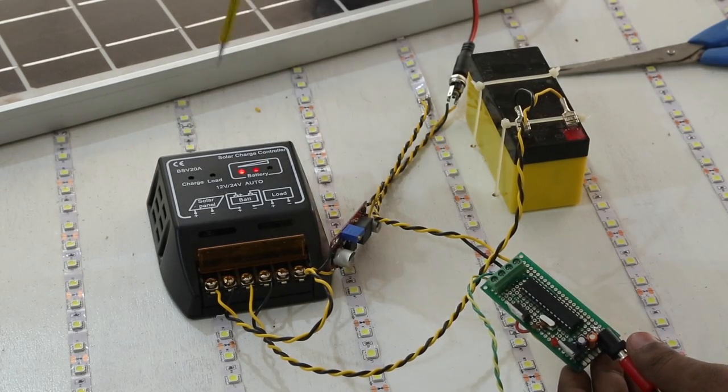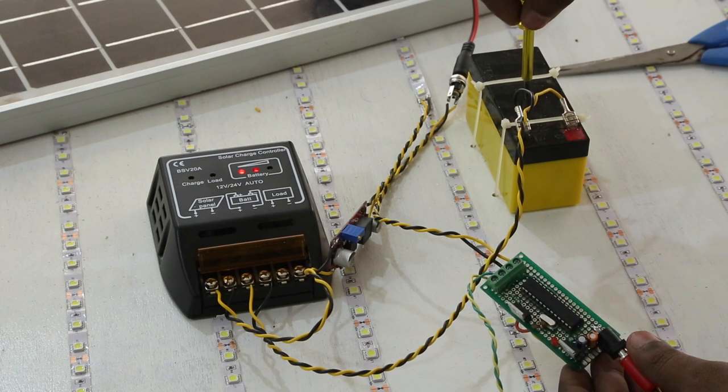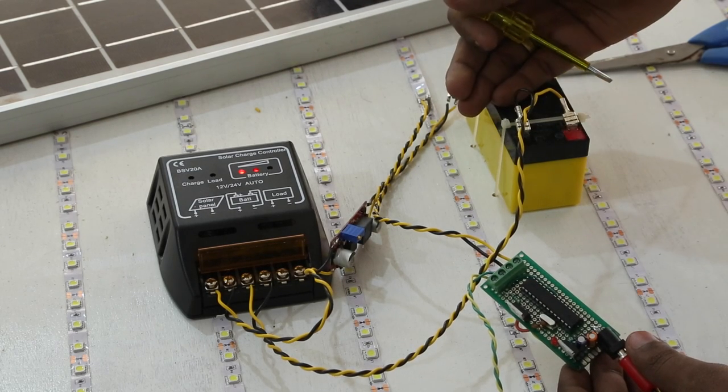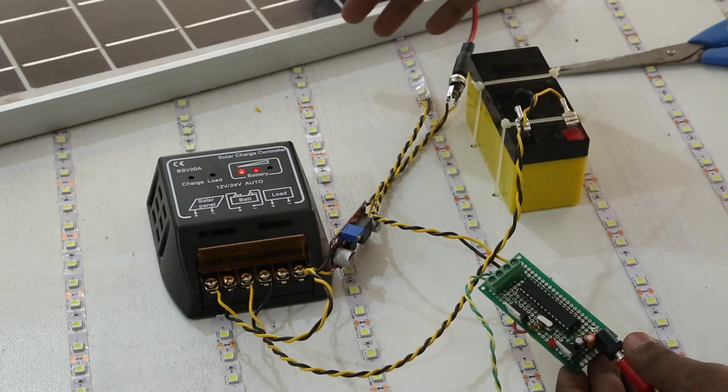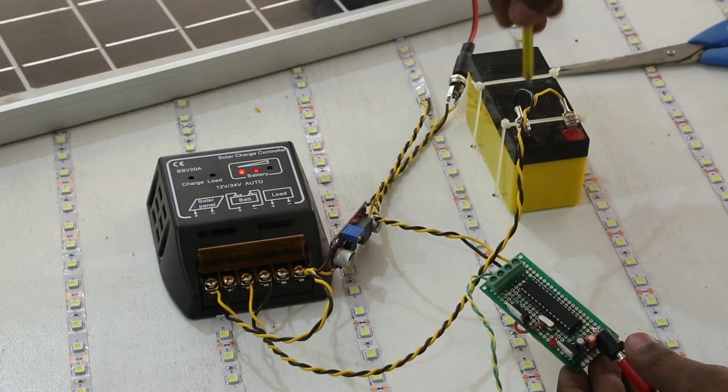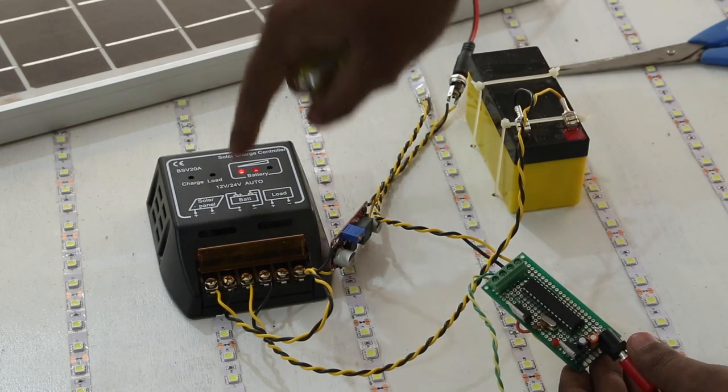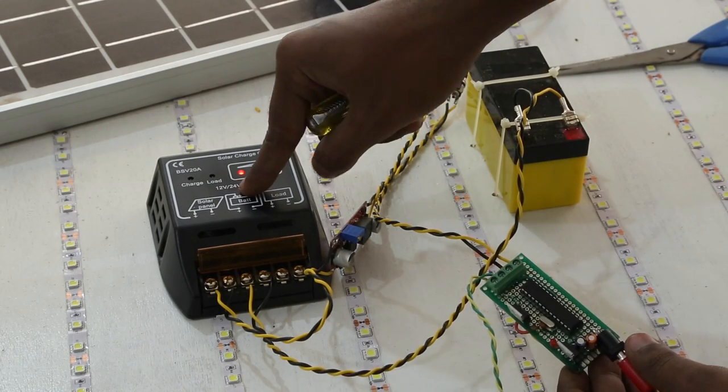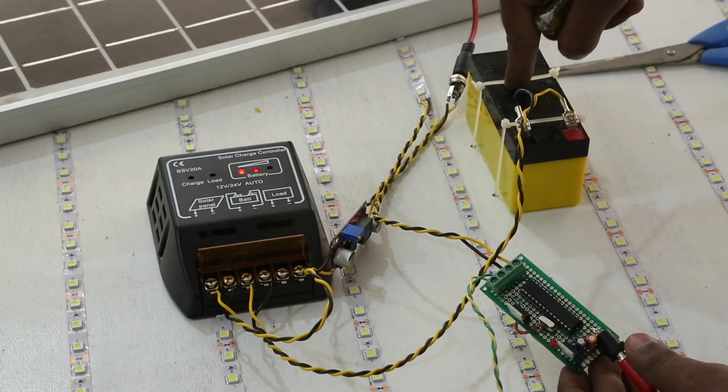You cannot connect the solar panel directly to the battery because during peak hours, when the sun is directly on top, it will generate a really large amount of voltage which will heat up the battery and eventually swell and burst. The charge controller protects from doing that by giving constant charging voltage.